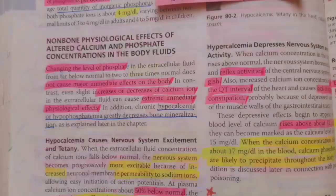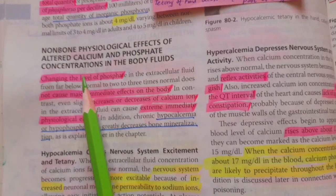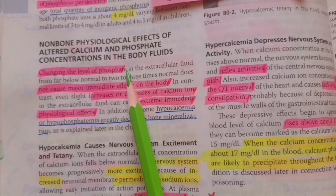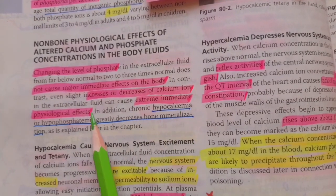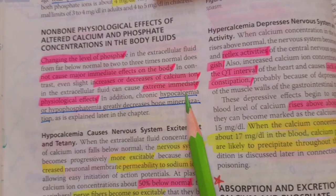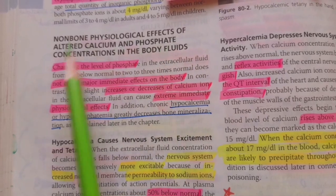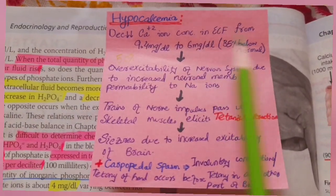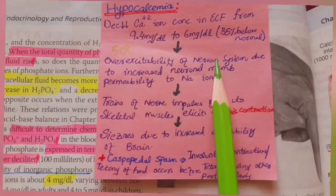Regarding non-bone physiological effects of altered calcium and phosphate concentrations: changing phosphate levels in ECF does not cause major immediate effects, whereas increasing or decreasing calcium ion concentration causes extreme immediate effects. Chronic hypocalcemia or hypophosphatemia greatly decreases bone mineralization. Focusing on hypocalcemia and its effect on the nervous system: when calcium ion concentration decreases to about 50% below normal, there is over-excitability of neurons due to increased neuronal membrane permeability to sodium ions, which causes depolarization.